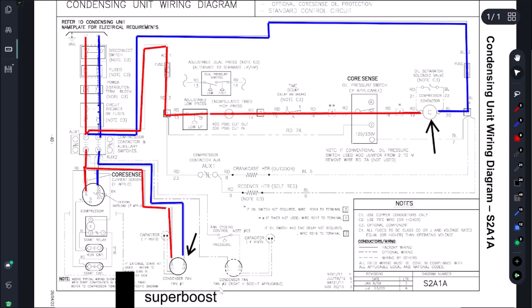All right, and just really quickly here, how we wire this in. So let's call this our super boost here. We are literally just gonna run it in parallel with our run cap. One lead here, we're just gonna piggyback right there. And that's how you wire in your super boost for this type of setup. And then make sure you're sizing your super boost correctly. So in this case, I used the super boost 80, which is good for one to five horsepower, and it was within my range of microfarads for the start cap.